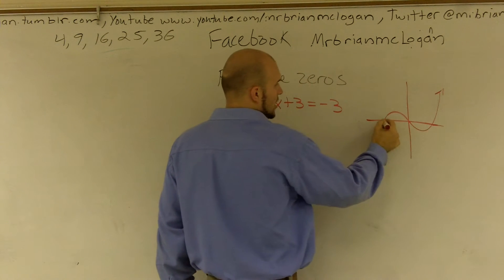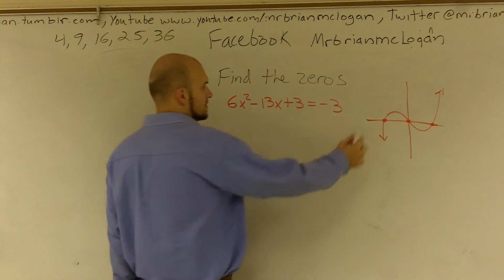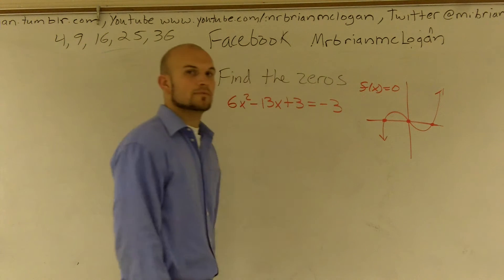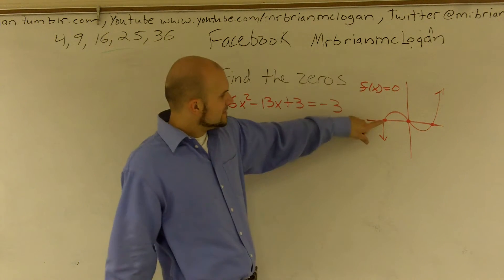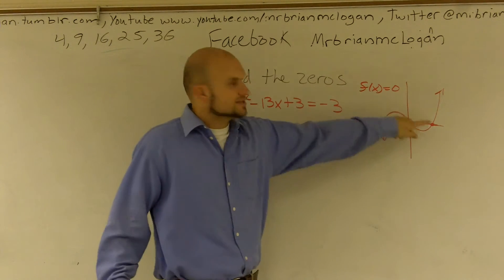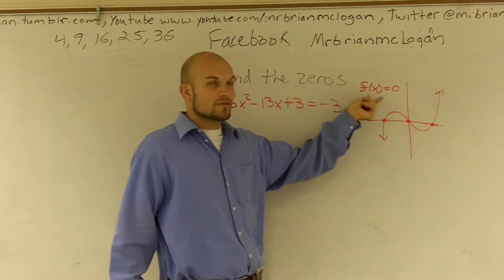Well, the zeros are where my function, the output value, is equal to zero. So what we like to say is when f(x) equals zero. So at these points, the output value or the y-value is equal to zero. So when we're trying to find the zeros, we always want to have it as f(x) equals zero.